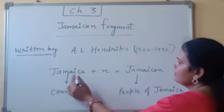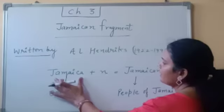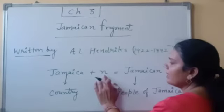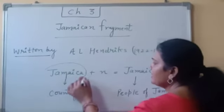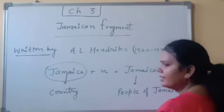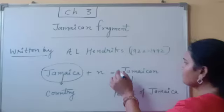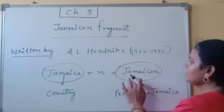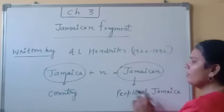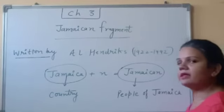You can see here, Jamaican is Jamaica plus N. It means that Jamaica is the name of country, like India is the name of our country. And Jamaican are the people of Jamaica, like Indian.